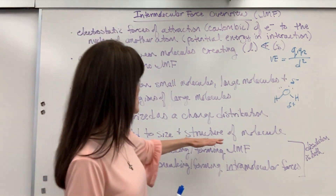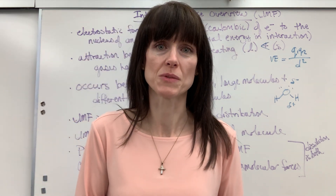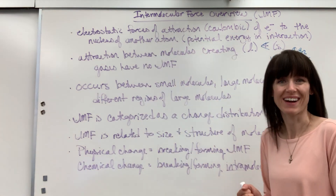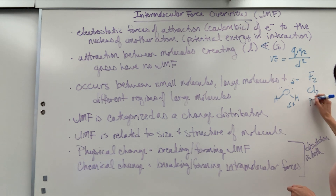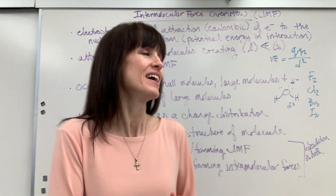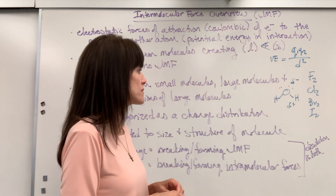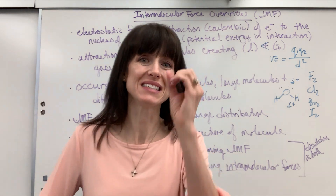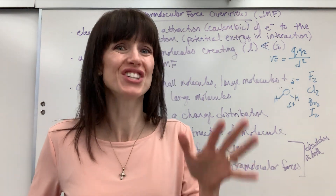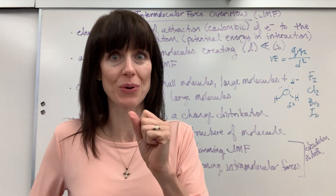In addition to structure, it's going to be the size — this really comes into play with London dispersion forces. Let me give you an example with our halogens: fluorine, chlorine, bromine, and iodine. These are diatomic elements — they always bond to themselves for stability and an octet. Because they bond to themselves, they have a zero dipole moment; they 100% share perfectly — extremely non-polar, quintessential non-polar.